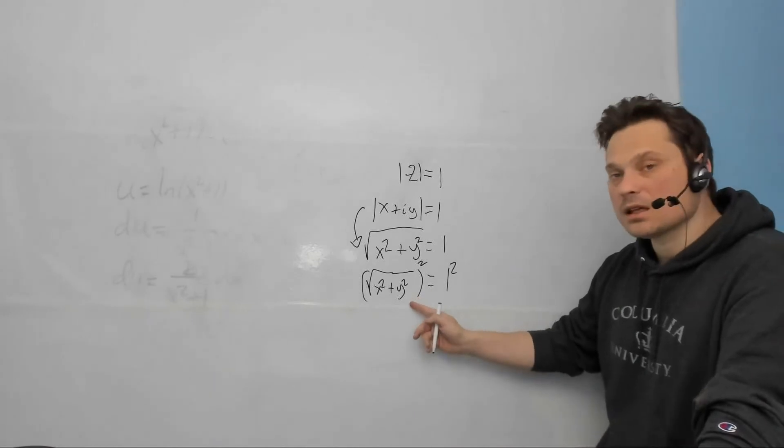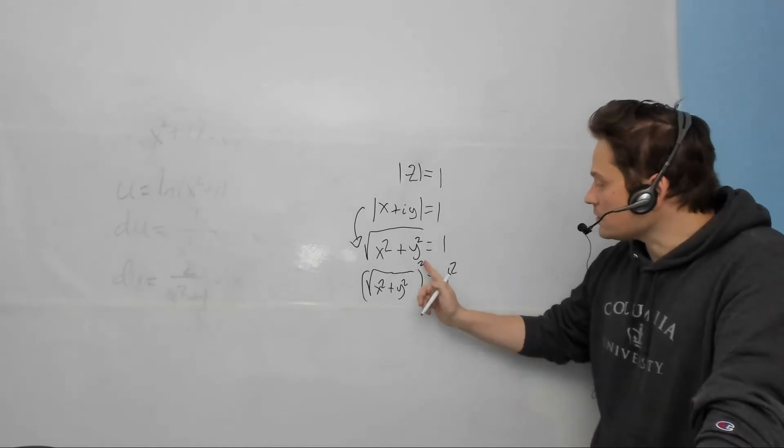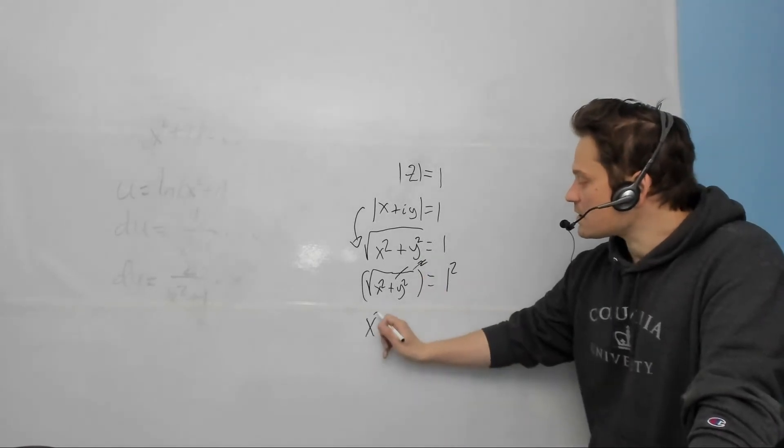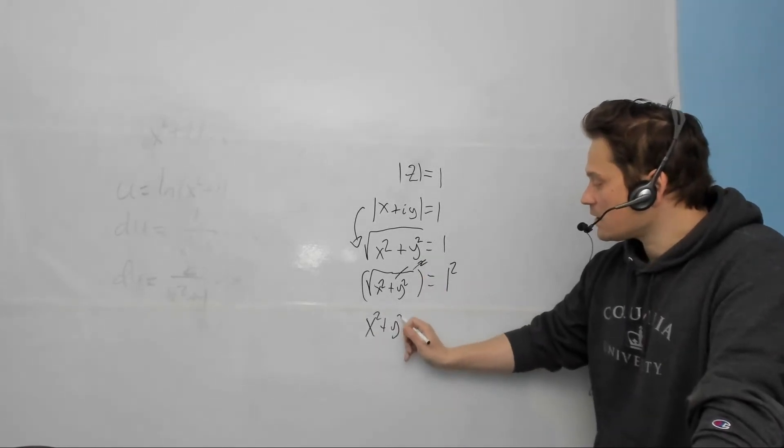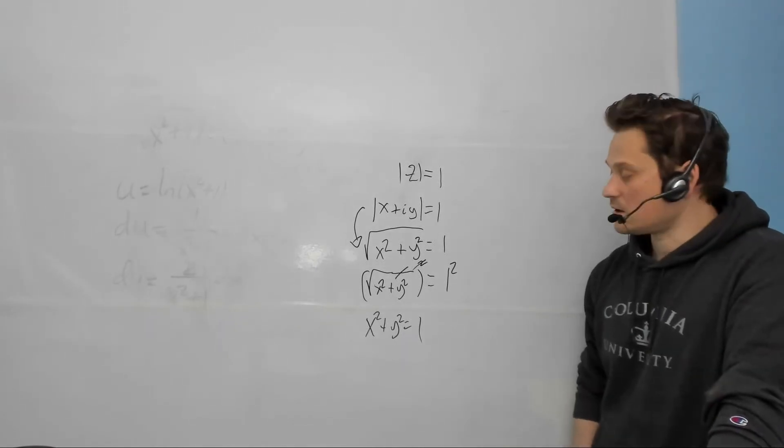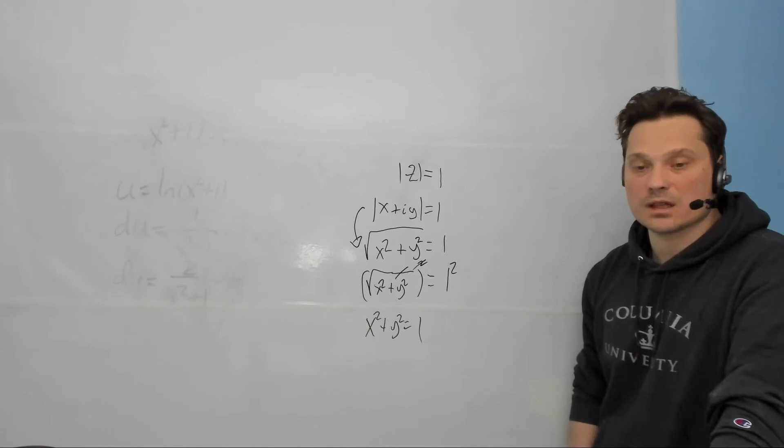Now at this step right here, I'm pointing, basically the root and the two cancel each other this way. So that's going to leave you with x squared plus y squared is equal to 1. And this is just a unit circle, essentially. So in other words, a circle whose radius is 1 unit.